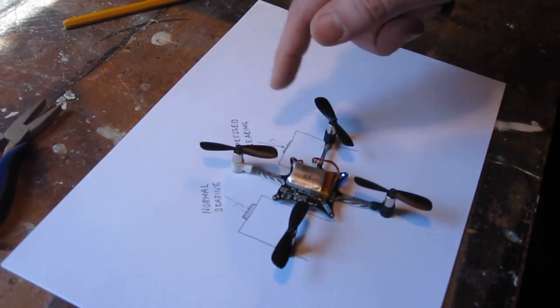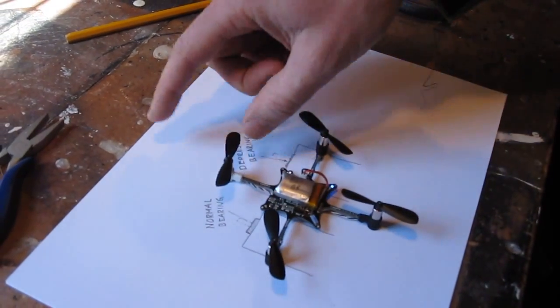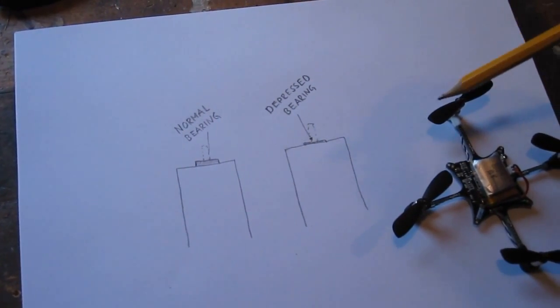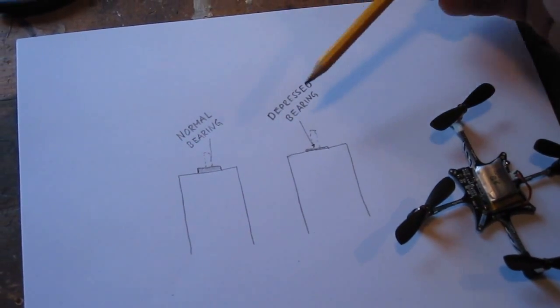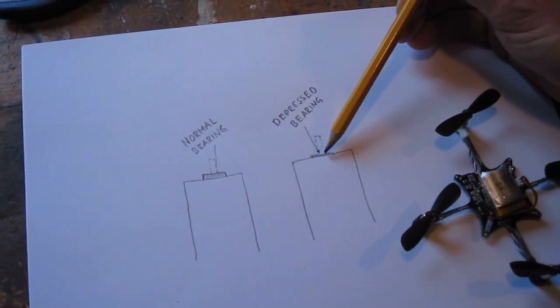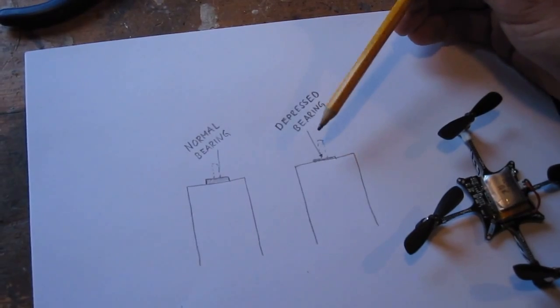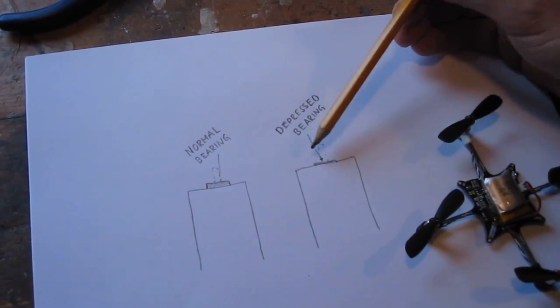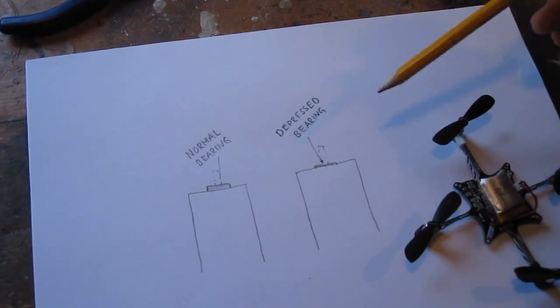You can also test it by pushing or blowing on them. One cause can be that you have a depressed bearing. The bearing is the little thing sticking out of the motor housing. If it's depressed, it is pressed into the motor housing, not sticking up as in the normal case.